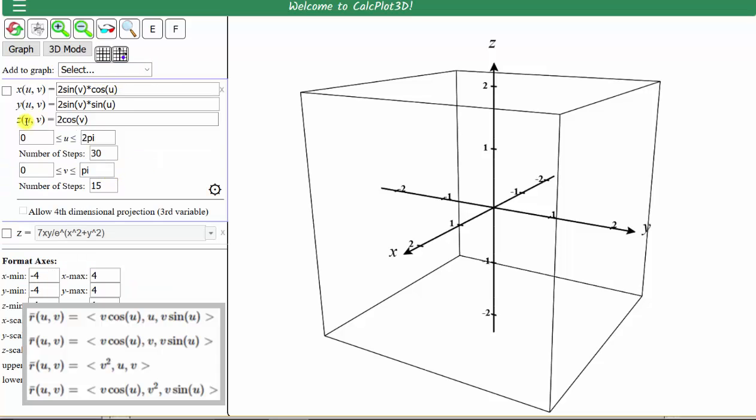Now we enter the x, y, and z components of the vector function r of u comma v. And therefore, x is equal to v times cosine u, y is equal to u, and z is equal to v times sine u.